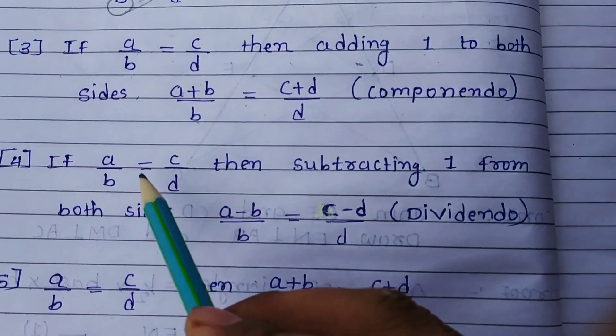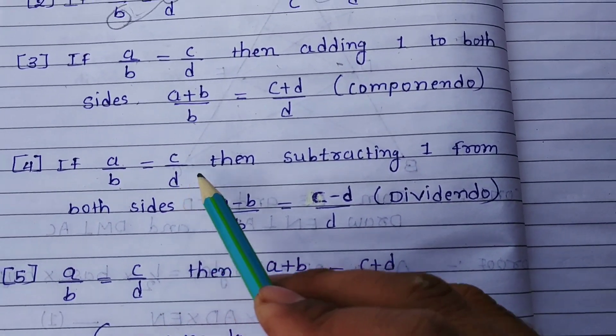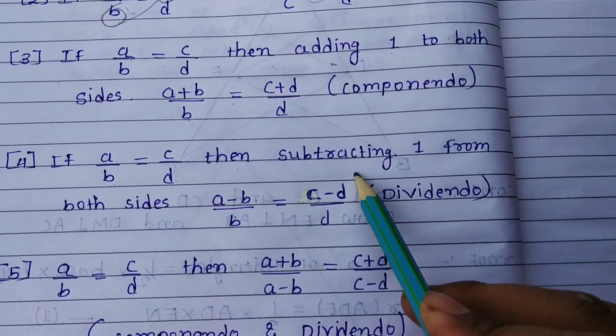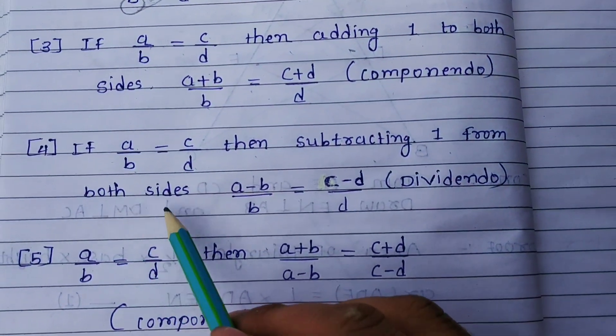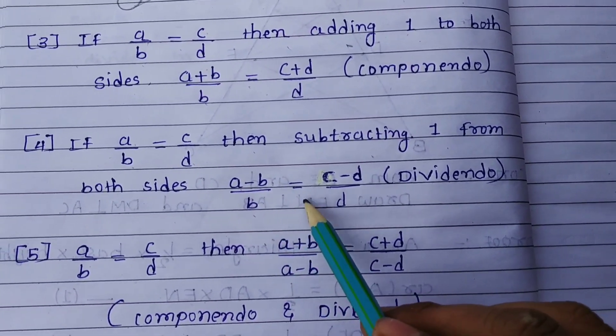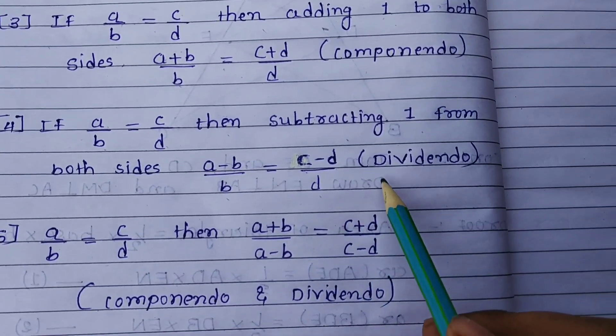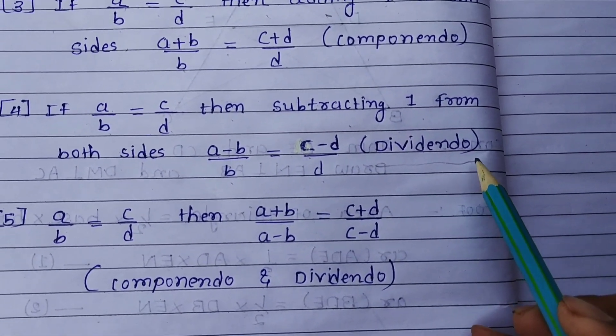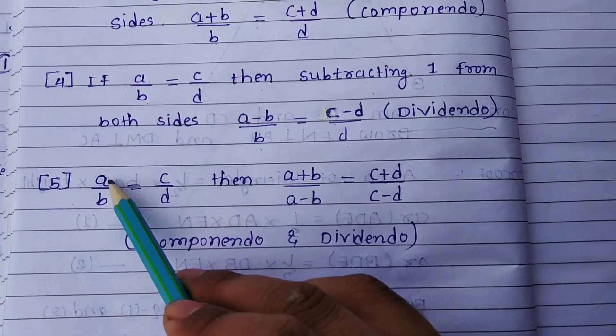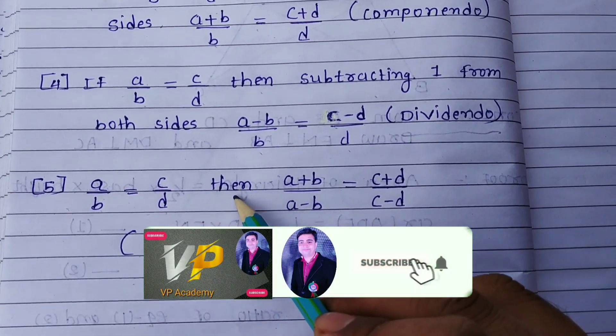Fourth result: if a upon b is equal to c upon d, then subtracting one from both sides, a minus b upon b is equal to c minus d upon d. It is known as dividendo. Now last and final result: a upon b is equal to c upon d.